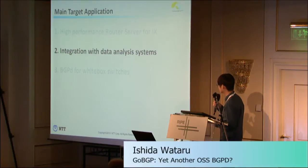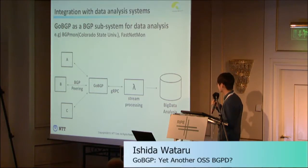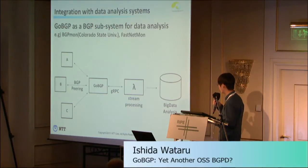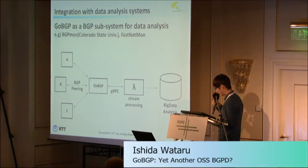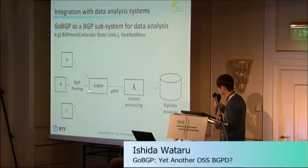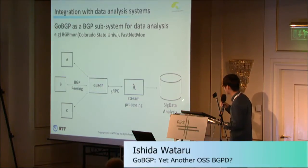The second target application is integration with data analysis systems. In this use case, GoBGP acts as a library for a BGP subsystem. We already have some users for this use case: BGPMon, a project led by Colorado State University which is a real-time version of RouteViews, and FastNetMon, which had a presentation on Monday. In this mode, GoBGP is just a BGP library and uses gRPC to integrate with your data analysis system.